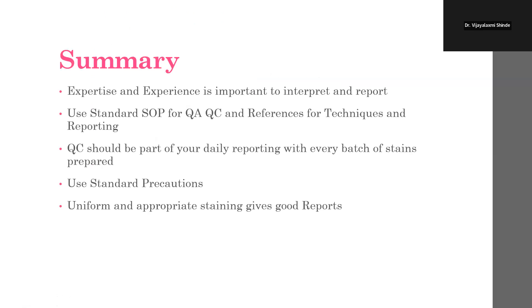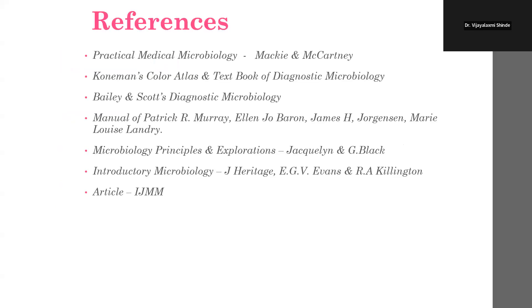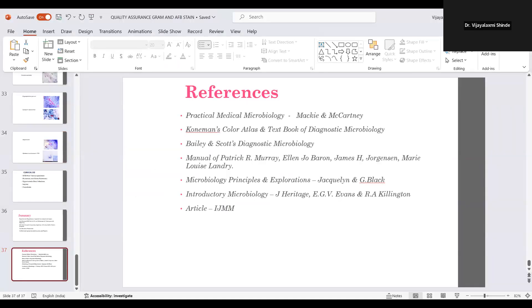Clinical diagnosis: ZN staining is useful for reporting Mycobacterium tuberculosis from various specimens — pulmonary or extra-pulmonary. Opportunistic infections in stool — isospora, cyclospora, cryptosporidium — are commonly reported. Leprosy — multibacillary or paucibacillary — can be diagnosed from appropriate samples. Nocardiosis requires expert interpretation. Summary: expertise and experience are the most important factors in interpreting and reporting. Use standard SOPs for QC references. Quality control should be part of daily reporting with every stain batch. Use standard precautions while handling any clinical specimen. Uniform and appropriate staining gives the best results.